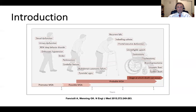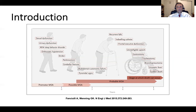The motor symptoms in multiple system atrophy lead to progressive disability and loss of independence. This can lead to loss of mobility, falls, and the patient may require a gait aid such as a cane, walker, or wheelchair. Parkinsonism and cerebellar dysfunction also lead to complications such as dysarthria — impacting communication with caregivers — and dysphagia, which can lead to aspiration pneumonia. The median survival time from onset of motor symptoms to death is approximately 8.5 to 9 years.